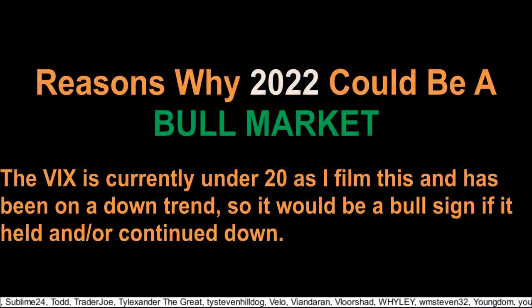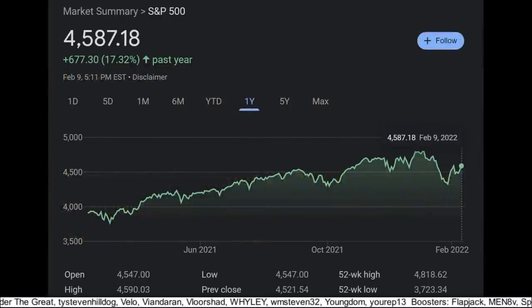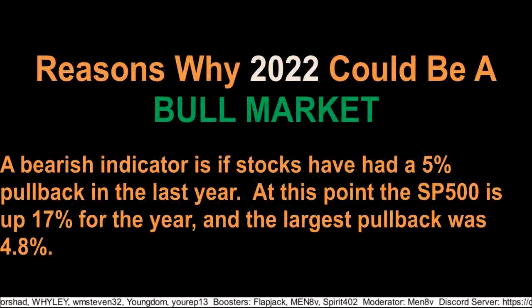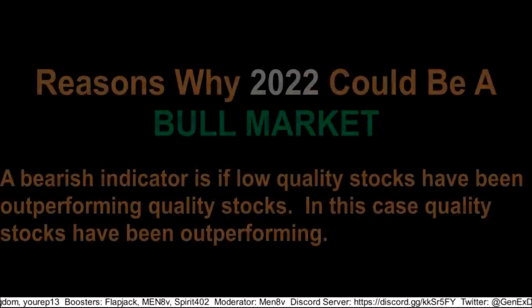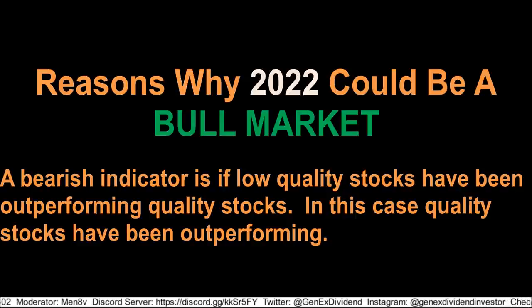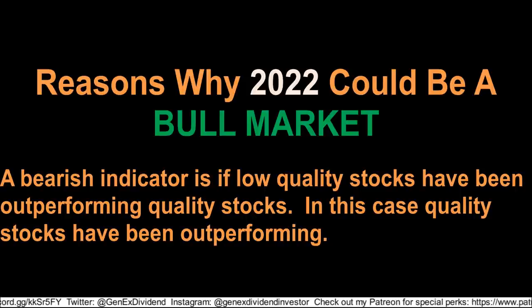Moving on, another indicator some people look at is if stocks have had a 5% pullback in the last year. Looking at the S&P 500, we see that we're up 17% for the last 12 months, and from the recent fall was about 4.8%, so overall went for the bulls for 2022. Another indicator to predict the future market that some people use is evaluating if low-quality stocks have outperformed high-quality stocks over the last six months. While we did have some interesting meme stocks with AMC and GME, overall conservative blue-chip stocks have held up better than other stocks. Quality always wins in the long run. So if you're investing in quality stocks, then there's a higher likelihood that 2022 could be a bull year for you.